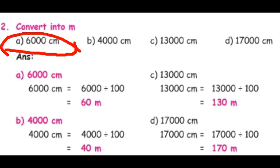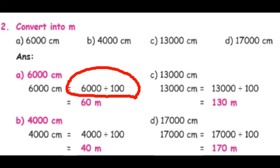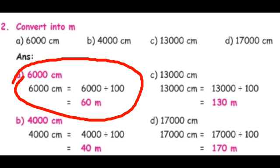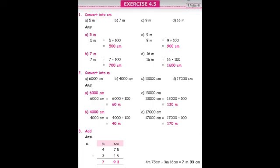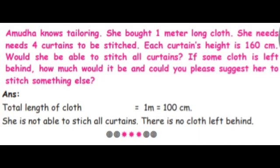6000 centimeters is given in question 2. We need to convert 6000 centimeters to meters, so we divide by 100. Two zeros are cancelled and our answer is 60 meters. Similarly, we will do questions 3 and 4, which are based on addition and subtraction of measurement. Now we are going to see the last sum in this exercise.